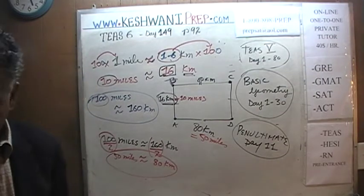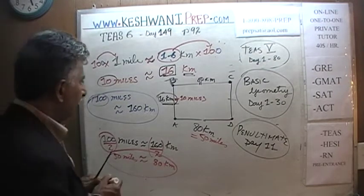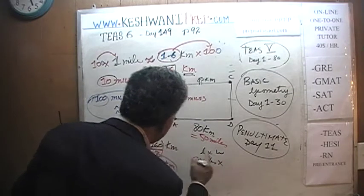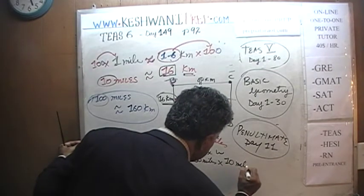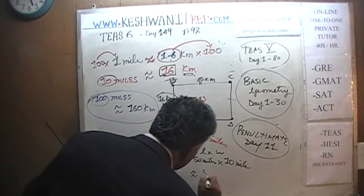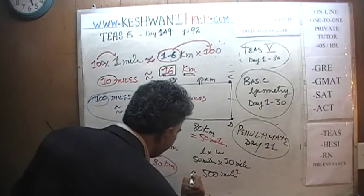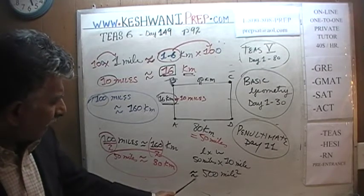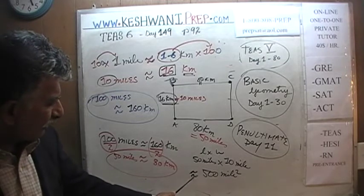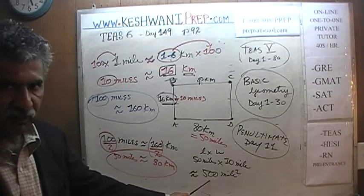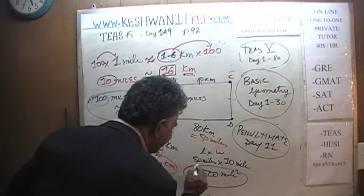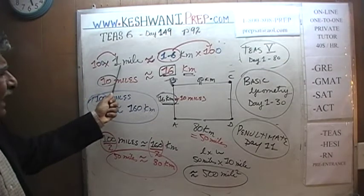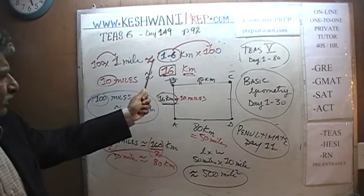Now we are ready to figure out our area in squared miles. The length is 50 miles and the width is 10 miles. Area of my town is about 500 square miles. Why do I say approximately? Because one mile is not exactly 1.6 kilometers — it's approximately 1.6 kilometers. That's where the approximation comes in.